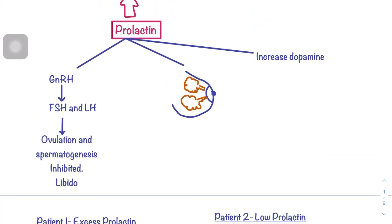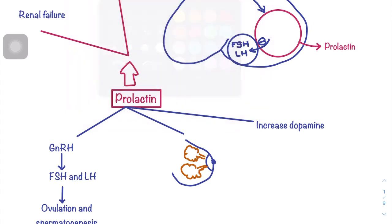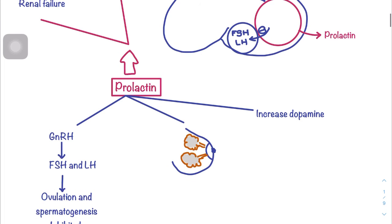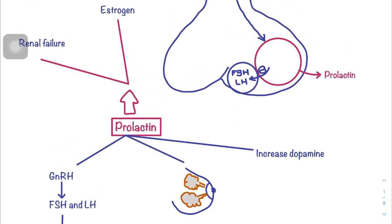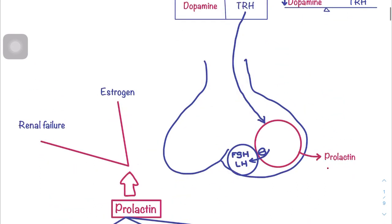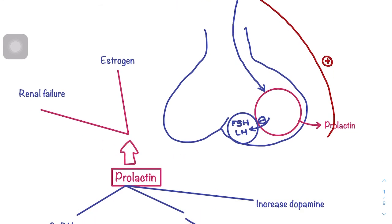At high levels, prolactin can decrease a person's libido. The main function of prolactin is causing milk production in the lobules of the mammary glands; the hormone involved in the release of milk is oxytocin. Prolactin also has a self-inhibition function by increasing dopamine levels, which causes prolactin levels to go down.